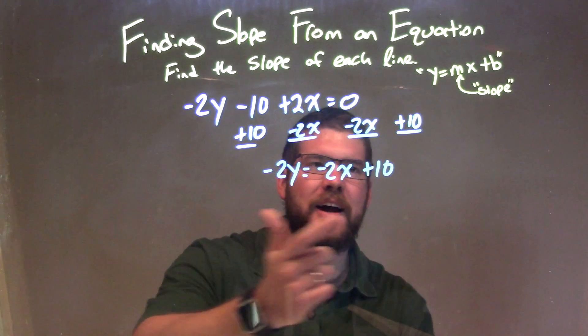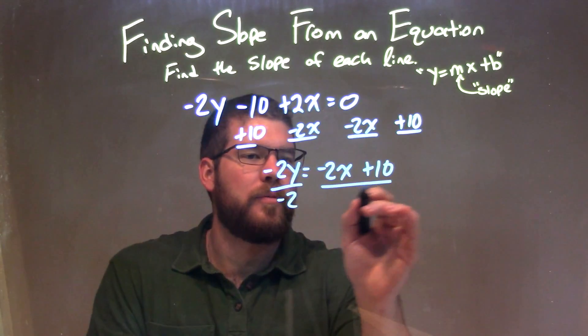Now to get y by itself, I need to divide by negative 2. So divide by negative 2 on both parts.